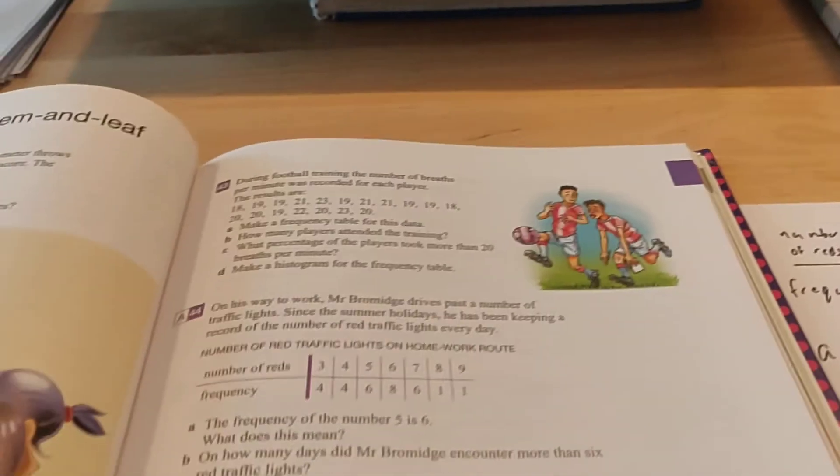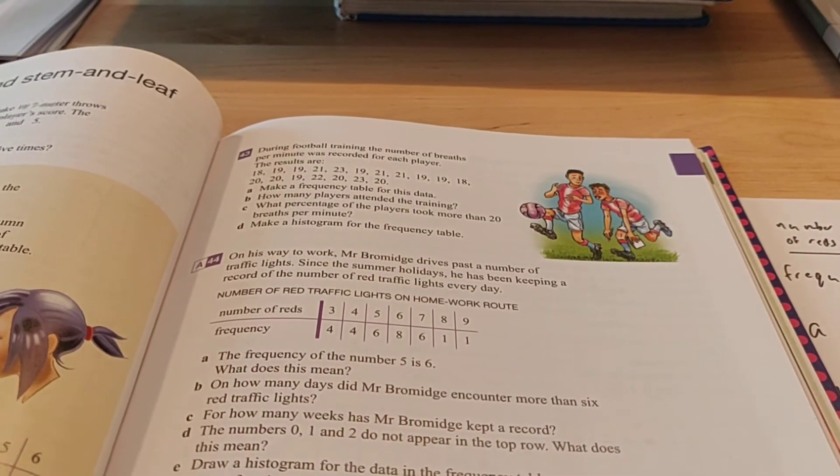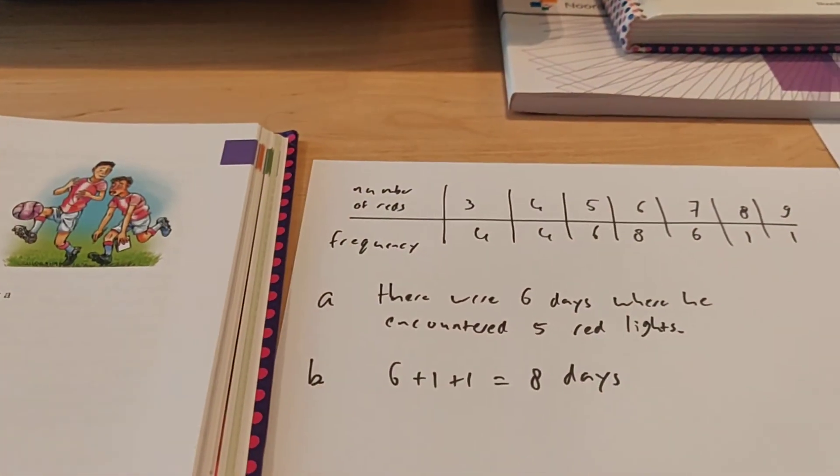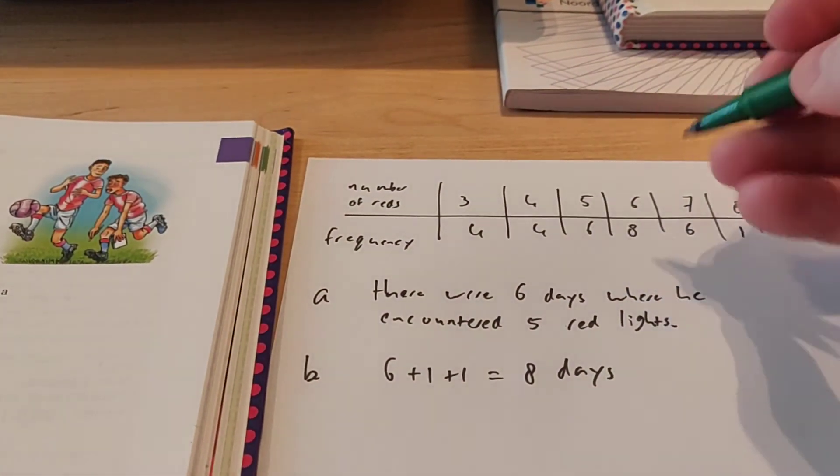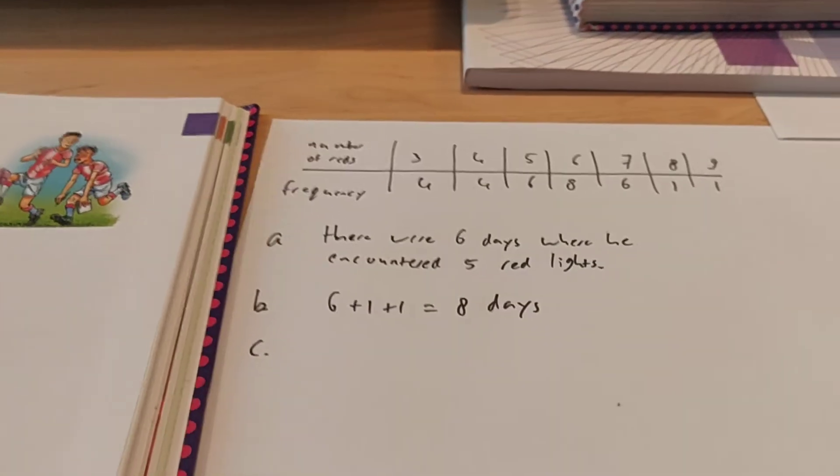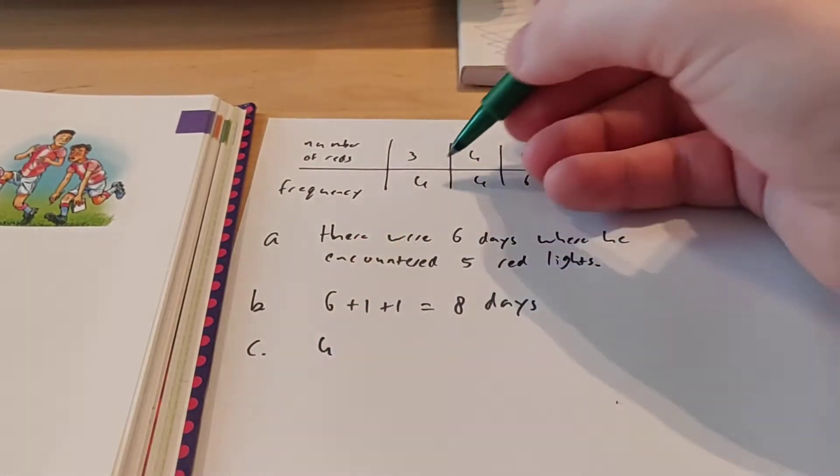Alright, let's take a look at what the next thing is. For how many weeks did Mr. Bromwich keep a record? Okay, so this is the number of days, right? He did that every day. So if we're going to add the total frequency, we're going to add all the numbers here, all the frequencies.